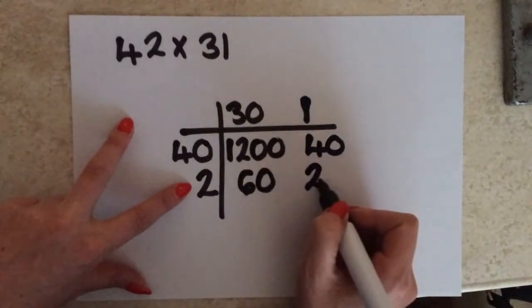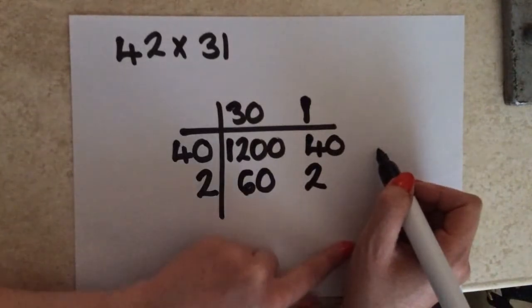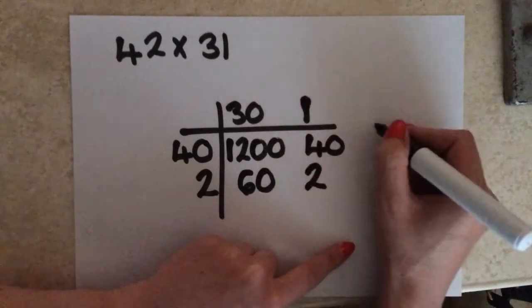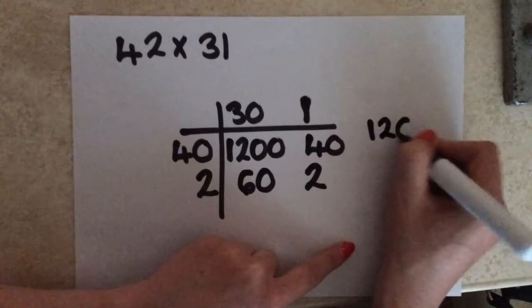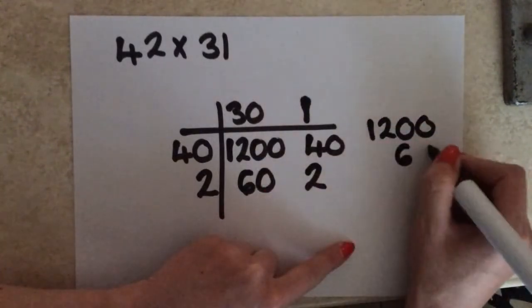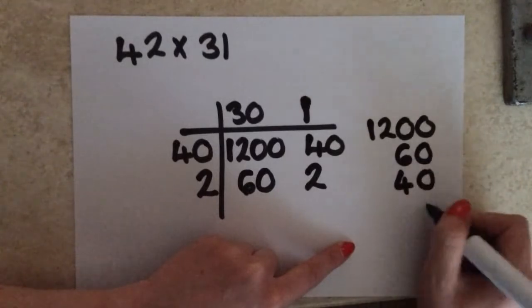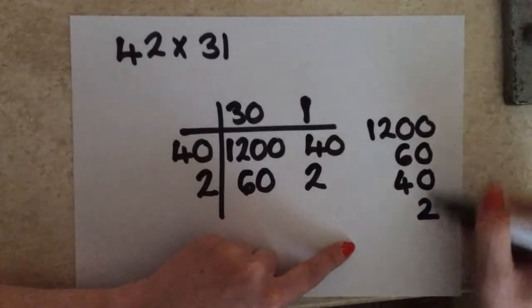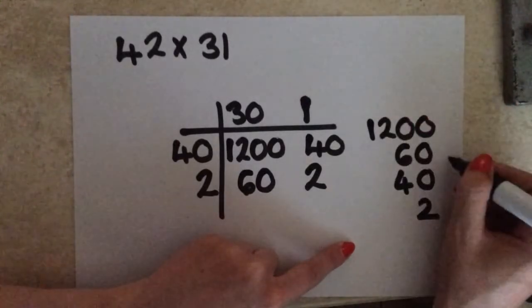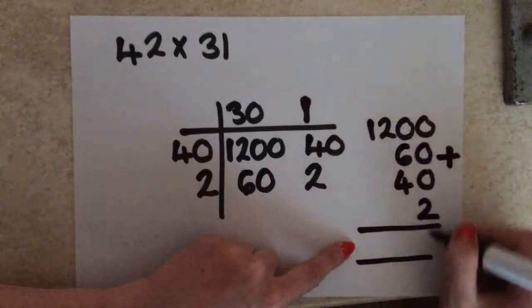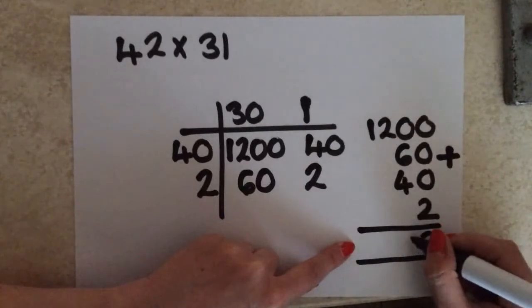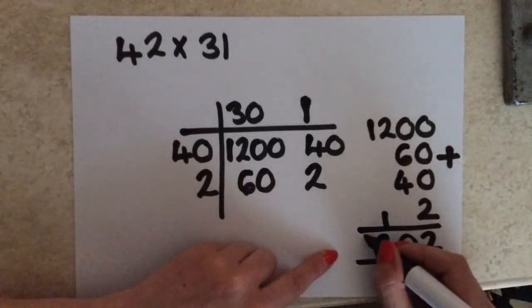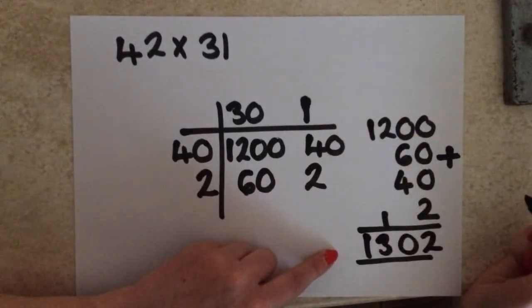I'm then going to take these 4 numbers and add them together at the side. You can add the numbers together in any order, but I always take the largest one first and then work down. So I'm going to set out 1,200, then 60, then 40, then 2. All of your numbers need to be lined up on their units first, then your tens, hundreds, one thousands. Adding those together: that gives me 2, 6 plus 4 gives me 10, carry the 1, 2 plus 1 is 3, and then the final 1 there — giving you a final answer of 1,302.